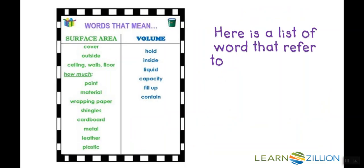Here are some words that refer to either volume or surface area that can help give you a clue about which unit of measure we're using. Remember, surface area is a measure of the outside using squares and volume is a measure of the inside using cubes.